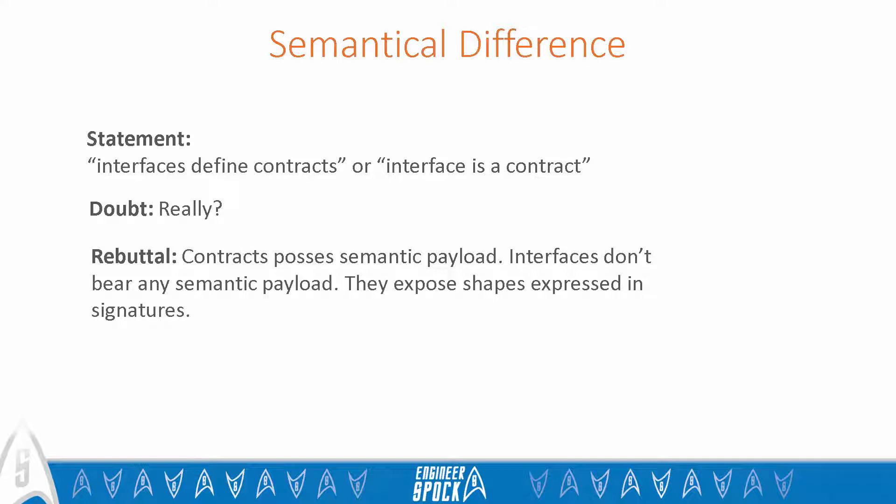Contracts usually determine some kind of relationships between people, rights, objects and so on. Interfaces have no semantic payload — they determine nothing except signatures. But signatures don't bear any significant semantic payload. An interface represents just a shape. Thus interfaces are not contracts.